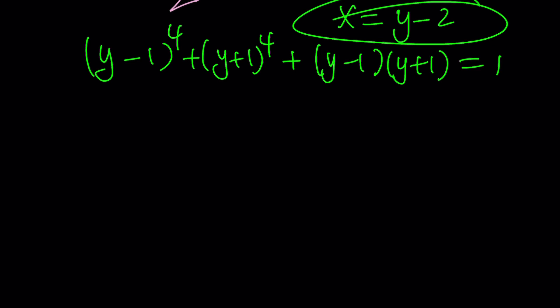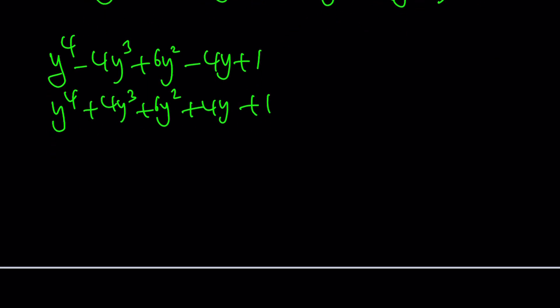Now, we have the binomial theorem again with the fourth power. But guess what? It's much nicer because of symmetry. A lot of things are going to cancel. Have you noticed that? So let's go ahead and write it down. This is going to give me y^4 minus 4y^3 plus 6y^2 minus 4y plus 1. If I write the same thing with all plus signs, certain things are going to cancel. I just want to align them so that I can show you real quick how these two simplify. Ta-da!